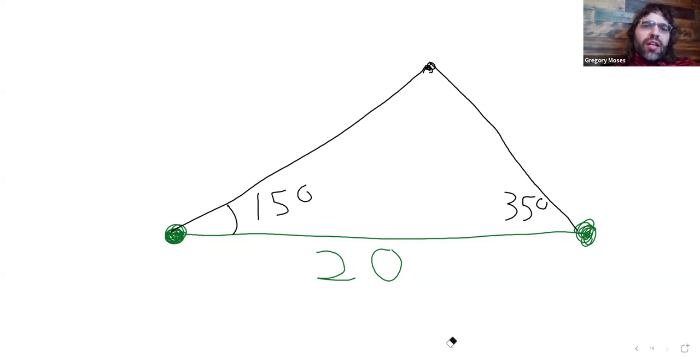It would let us find this side of the triangle. It would let us solve that side of the triangle. It doesn't immediately let us solve that vertical height.